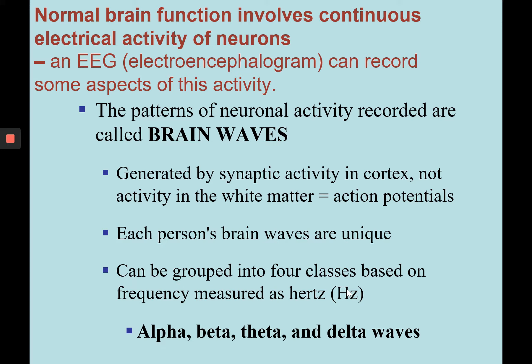Next, we're going to look at an EEG, or electroencephalogram, which can record some aspects of brain activity. Normal brain functions involve continuous electrical activity occurring at the synapses between neurons, and these patterns of neuronal activity at synapses can be recorded as brain waves. An EEG measures the generated synaptic potential occurring at the synapses — it is not measuring action potentials.